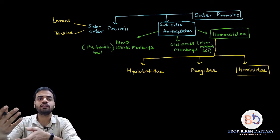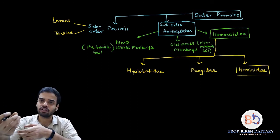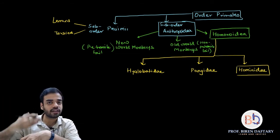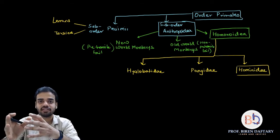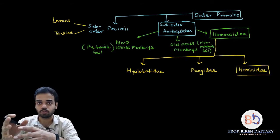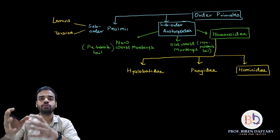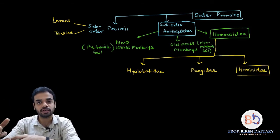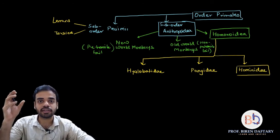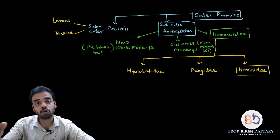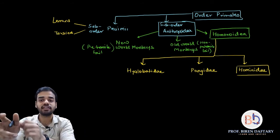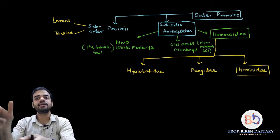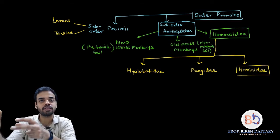Old World monkeys have a flat snout while New World monkeys have a narrow snout. The migration of New World monkeys from Africa to South America took place around 40 million years ago. Apes were also in Africa along with Old World monkeys, so Anthropoidea simultaneously gave rise to New World monkeys, Old World monkeys, apes, and humans.